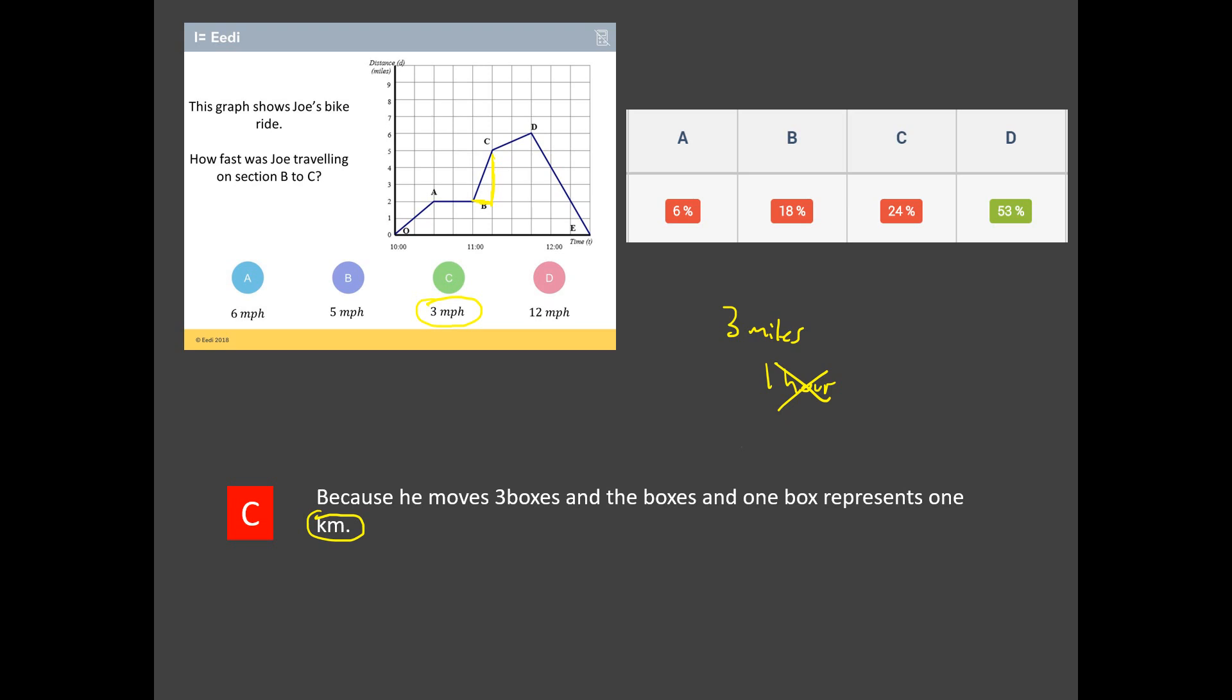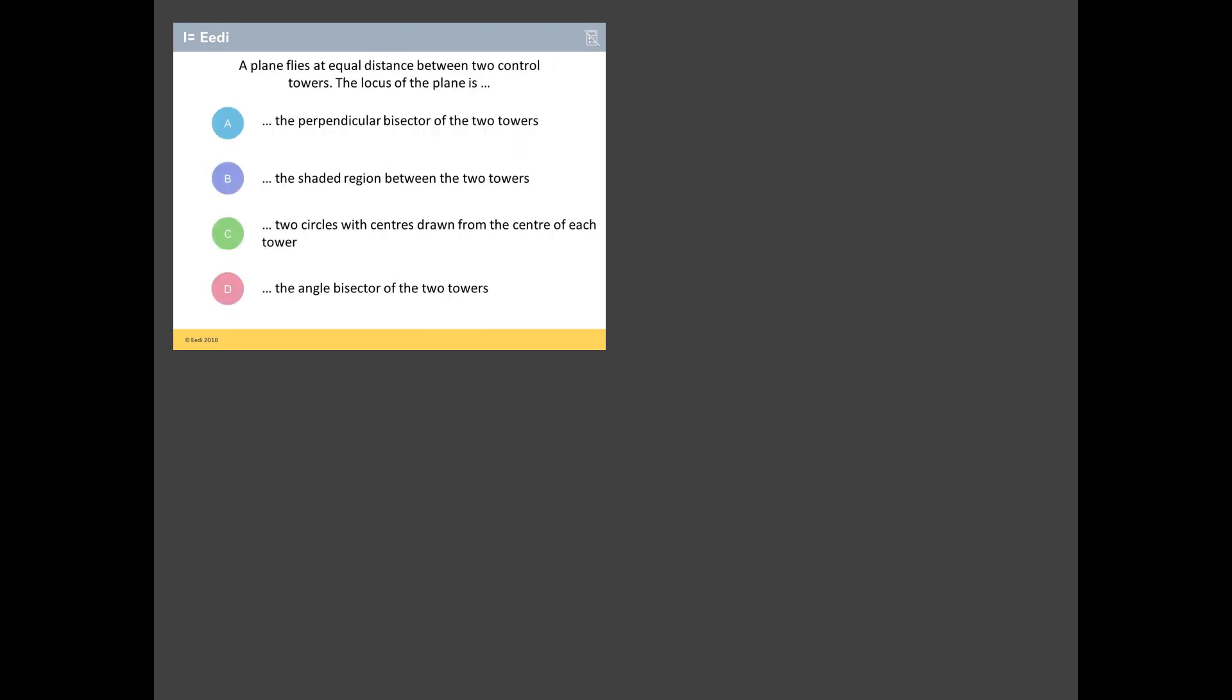OK. How did you get on with that one? Another tricky one there. Which brings us to the final question. The worst answer of all those three. It is this question here. Did you predict that this one would be the worst answered question? Do you think you've got this one right? Let's have a look at this one. A plane flies at an equal distance between two control towers. Now, what I'm going to do, I don't know any other information about where these control towers are. So, I'm just going to bang them here. The locus of the plane is. So, the locus. This is all about all your compass, constructions, the pencils, the rulers, all that kind of thing.